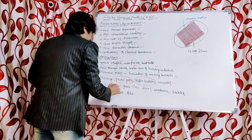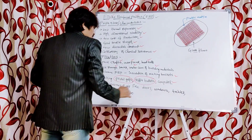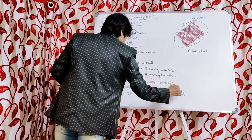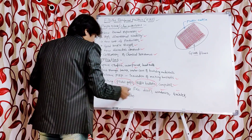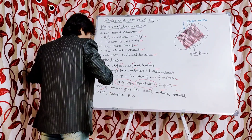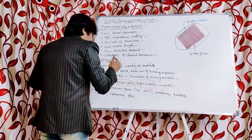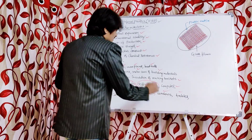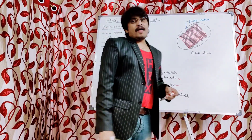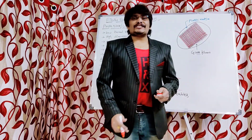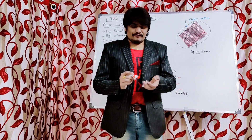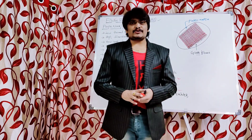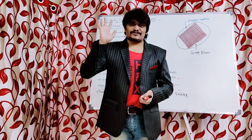Fiber reinforced plastics are also used for computer tape and consumer goods like doors, windows, tables, chairs, and even cameras. This is about the fiber reinforced plastics. I hope you understood this. Thanks very much.